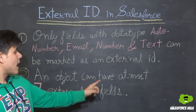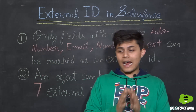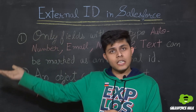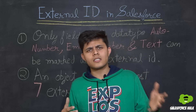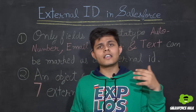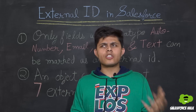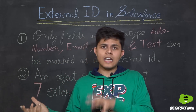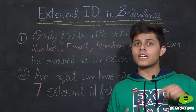The second limitation: an object can have at most seven external ID fields. You can have a maximum of seven external ID fields on a single object. Earlier it was three, and you might find some quizzes or blogs where the answer is still listed as three, but it was changed around Spring '14 or '15. Now it is seven — you can only create seven external ID fields on a single object.